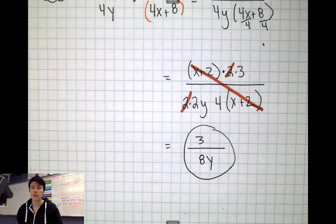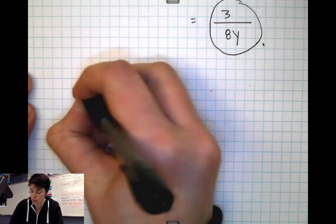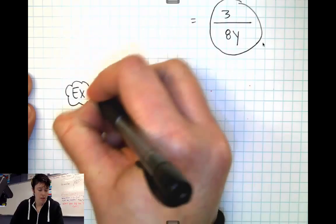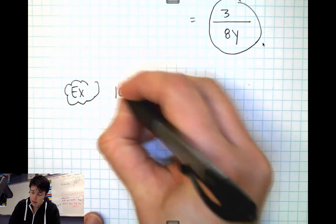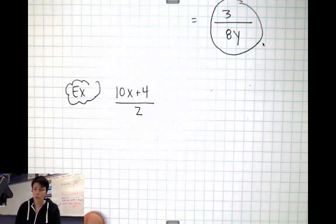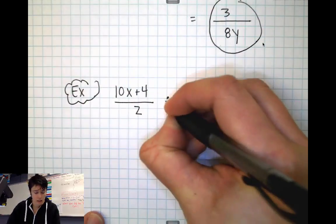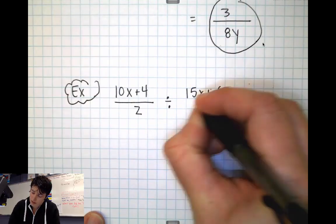Now if I turn these into division problems, they're not really much different. Division just adds one extra step. So now I'm going to do a division example here. Let's say you had something like (10x+4)/2 and we were going to divide it by (15x+6)/7.